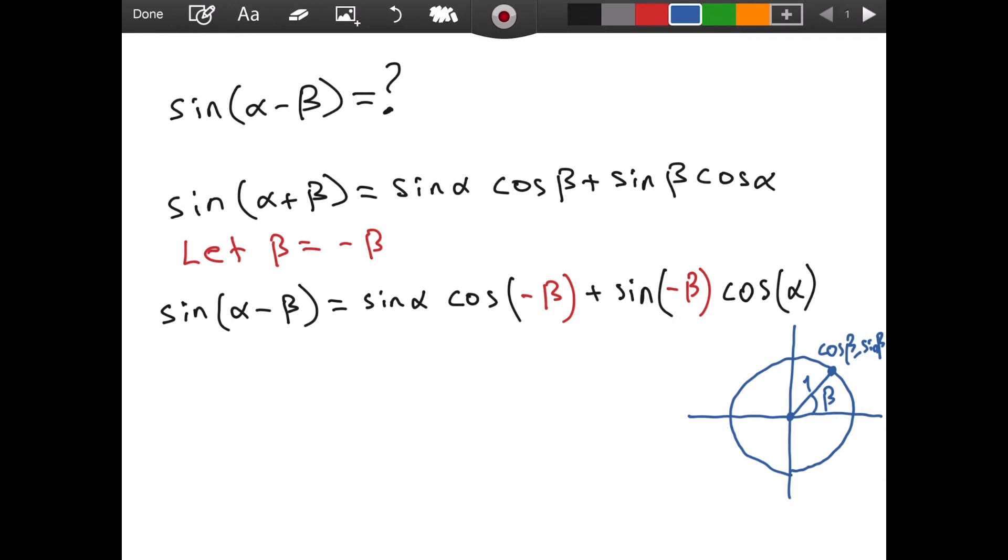So if I also draw the negative β, you will understand where I'm going with this. Then this is -β. As you can see, this point is cos(β). We still have a positive cosine value, positive x value. But this time, our y value is reversed. It isn't sin(β) anymore. It is -sin(β). So we got this.